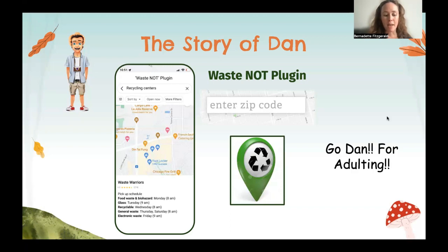But on Google Maps, there is a plugin called Waste Not that tells him when to put his trash out. All he had to do was put in his zip code. And if he misses a night, Waste Not tells him where the closest bins are located in case he needs to take his extra waste or recycling to the bins himself.